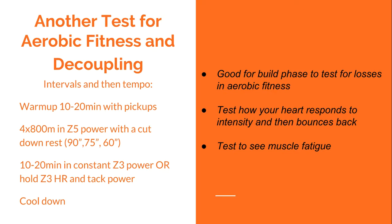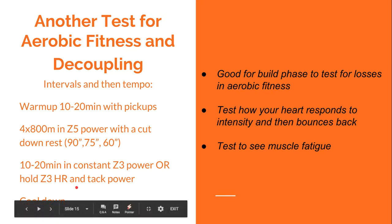Then 4 by 800 meters in zone 5 power with a cut-down rest. The reason I'm using power instead of heart rate here is that power is easier to track and has less lag — with heart rate it takes about 30 seconds to get up into zone 5, whereas power is almost instantaneous. The rest intervals cut down from 90 seconds to 75 seconds to 60 seconds between those 800s. From there I go into 10 to 20 minutes at a constant zone 3 power and see where my heart rate goes.